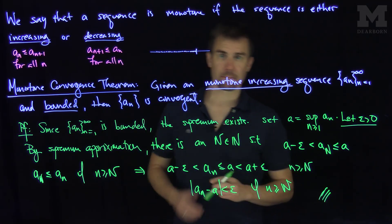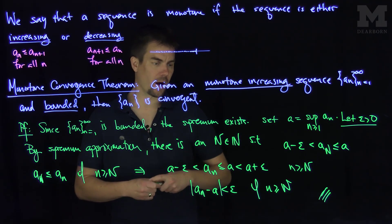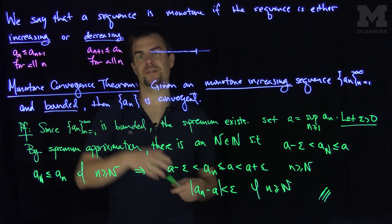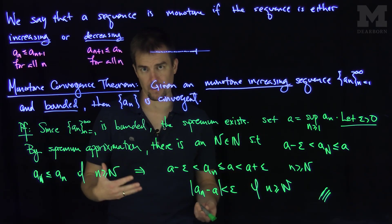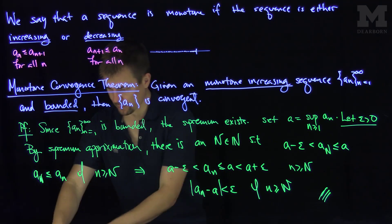Monotone increasing and bounded implies that you're going to converge to the supremum. In the case of a decreasing sequence, you're going to change supremum to infimum and just reverse the sequence.